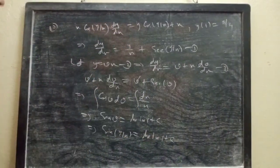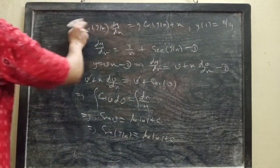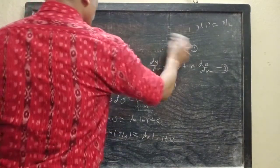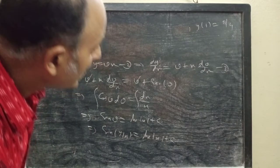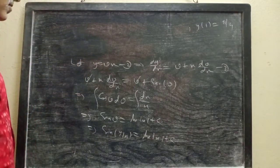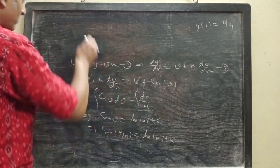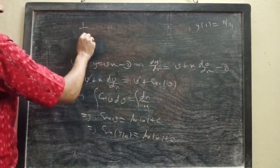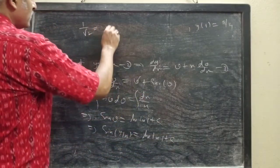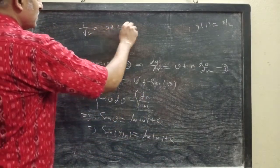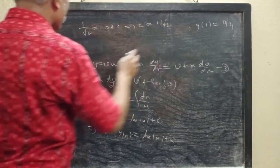Now apply the initial condition: when x equals 1 then y equals π/4. This becomes sin(π/4) equals 1/√2. Since ln(1) is 0, we get 1/√2 equals 0 plus c. So finally we get c equals 1/√2.